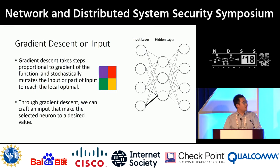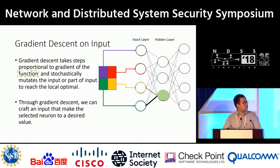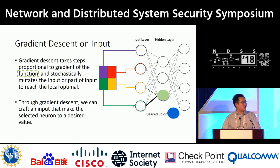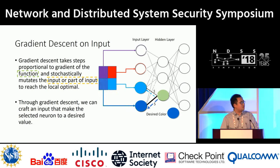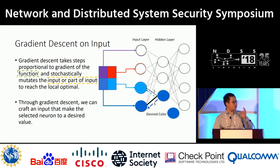I'll use a toy example to illustrate gradient descent on input. Suppose we have four pixels: purple, red, yellow, and green. Once I feed this into the model, the bottom neuron of a hidden layer becomes light green. We select this neuron as our target function, and we want to change the input to make this neuron become dark blue. We select the green and yellow input neurons to modify. The weights connecting these neurons are different, so the gradients are different and the changes are different. After changing those two neurons to light and dark blue, the targeted neuron becomes dark blue. Through gradient descent, we can craft an input that makes a selected neuron reach any desired value.